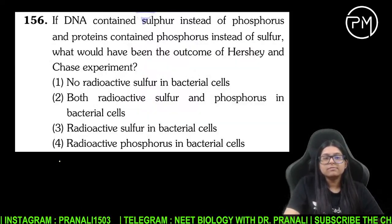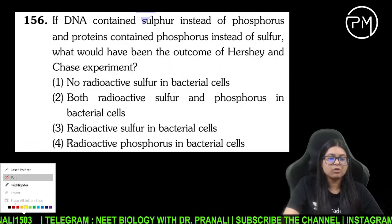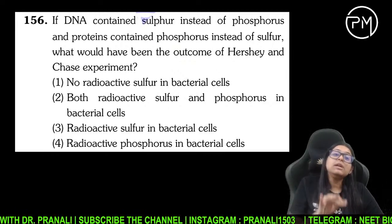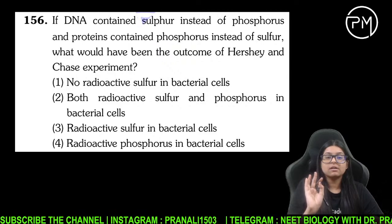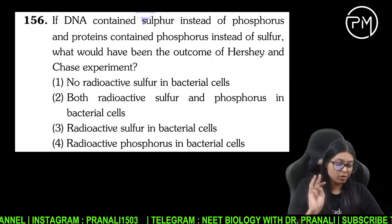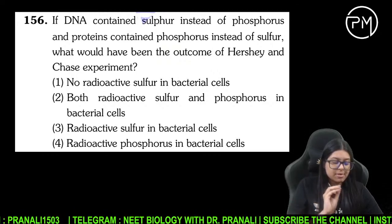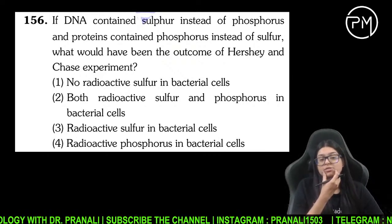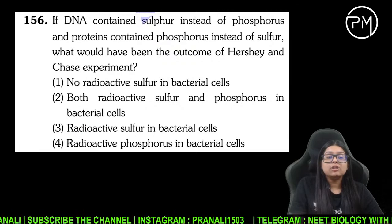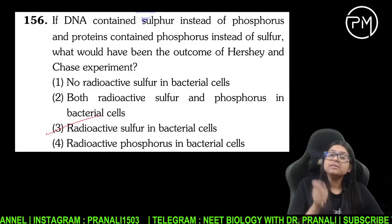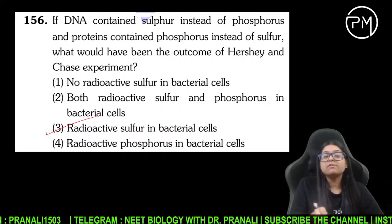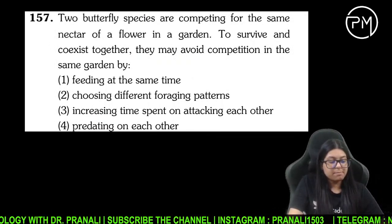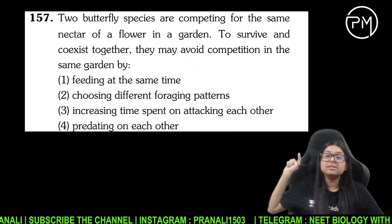DNA mein sulfur hota phosphorus ki jagah — dekho, ek accha question hai. Agar DNA mein phosphate group ki jagah sulfur hota aur protein mein sulfur ki jagah phosphorus hota, toh Hershey aur Chase ka experiment sahi ho paata kya? Nahi ho paata. Bacteria ki cell mein radioactive sulfur dikhhta — radioactivity kahan pe aati jahan DNA tha.